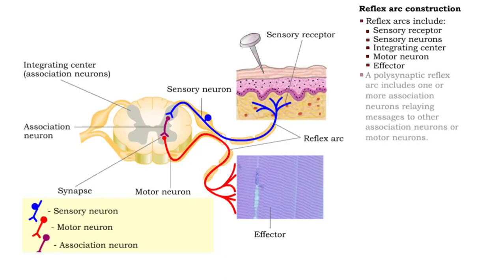When an integrating center has one or more association neurons relaying messages to other association or motor neurons, the reflex arc is polysynaptic.